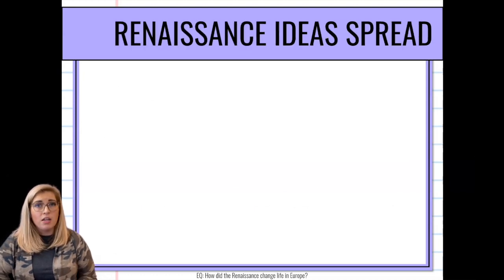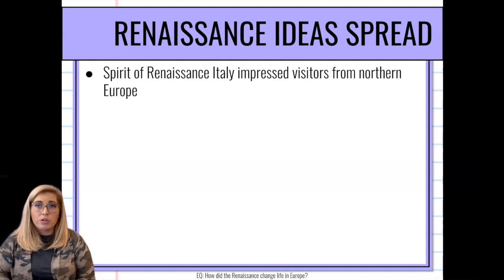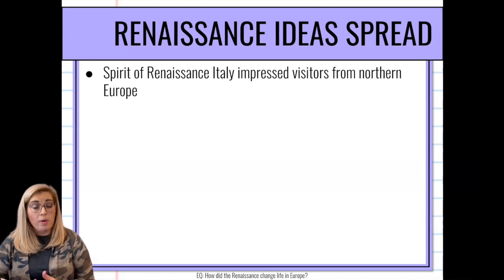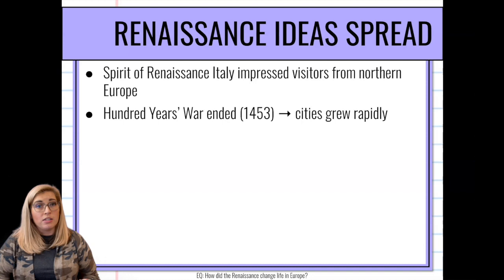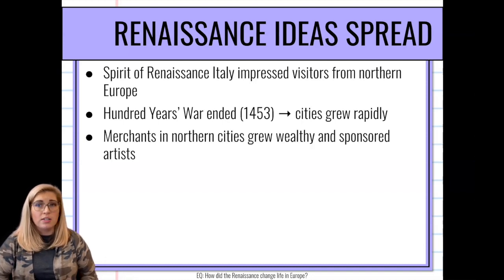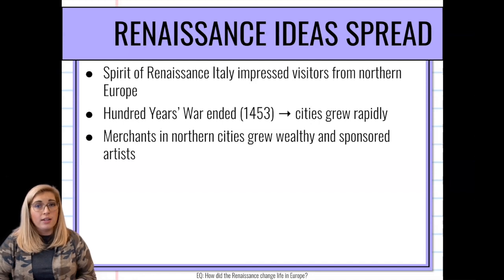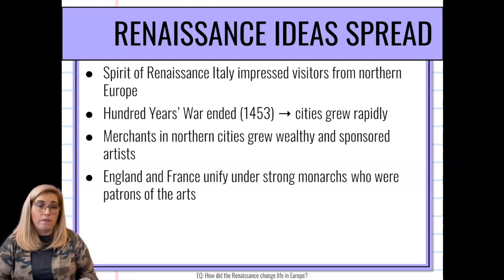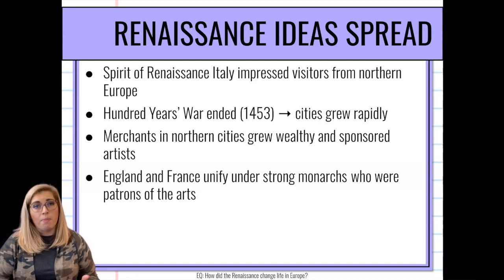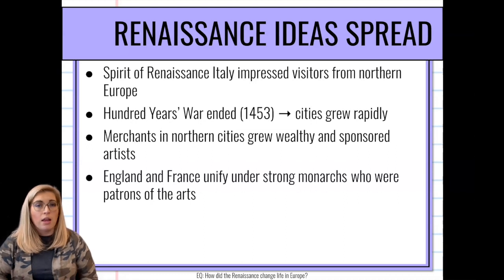The Renaissance was able to spread its ideas through a couple of different methods. As people visited Italy and went home, they tried to replicate what they'd seen — the Renaissance spread partly by word of mouth. The Hundred Years' War ended in 1453, helping cities start to grow rapidly. Merchants in northern cities grew wealthy and became patrons of the arts, sponsoring artists. England and France became well-developed nations, unified under specific monarchs — kings and queens — who also became patrons of the arts, pouring money into Renaissance-type projects.